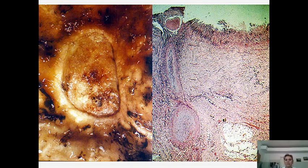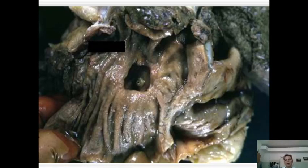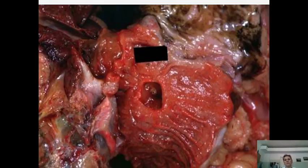In this photo you can see a chronic ulcer: oval form, large — more than one centimeter — with growth of rough connective tissue at the bottom and edges of the ulcer, causing connective tissue growth and deformation of the wall of the stomach.